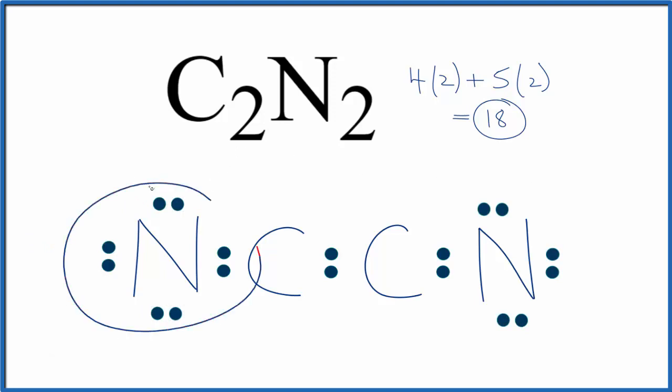We can see that each nitrogen atom has an octet. That's good. But these carbon atoms only have four valence electrons. So we need to do something to get octets on the carbon atoms. What we can do is move electrons to the center to form double bonds.